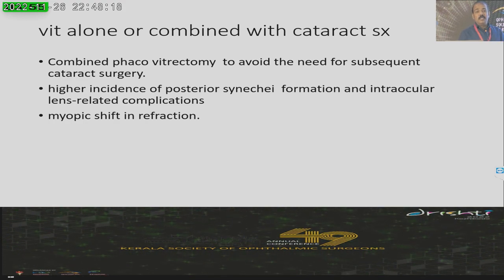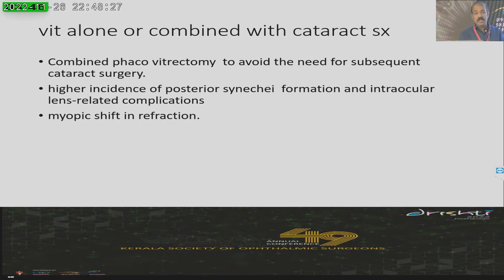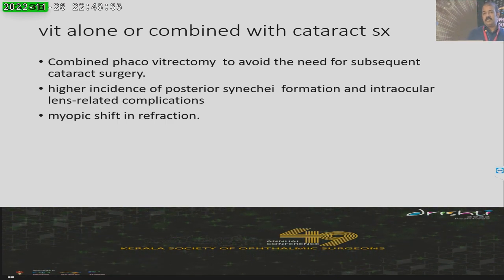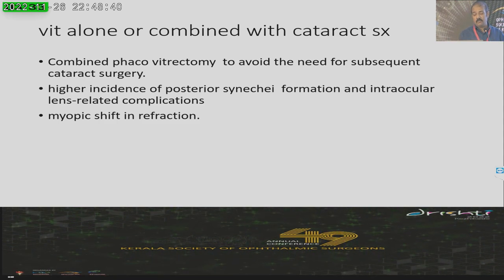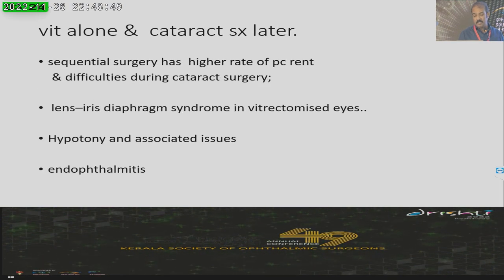Especially after vitrectomy, cataract is going to increase, so most often combined vitrectomy and cataract surgery can be done. When done together, there is a higher incidence of posterior synechiae formation and lens-related complications, and a myopic shift of perhaps 0.5 diopters can be seen in such patients. Sequential vitrectomy and cataract surgery can also be done, but while doing cataract surgery due to lack of vitreous support, the lens-iris diaphragm can go down, making surgery difficult. There are also increased chances of posterior capsule rupture.